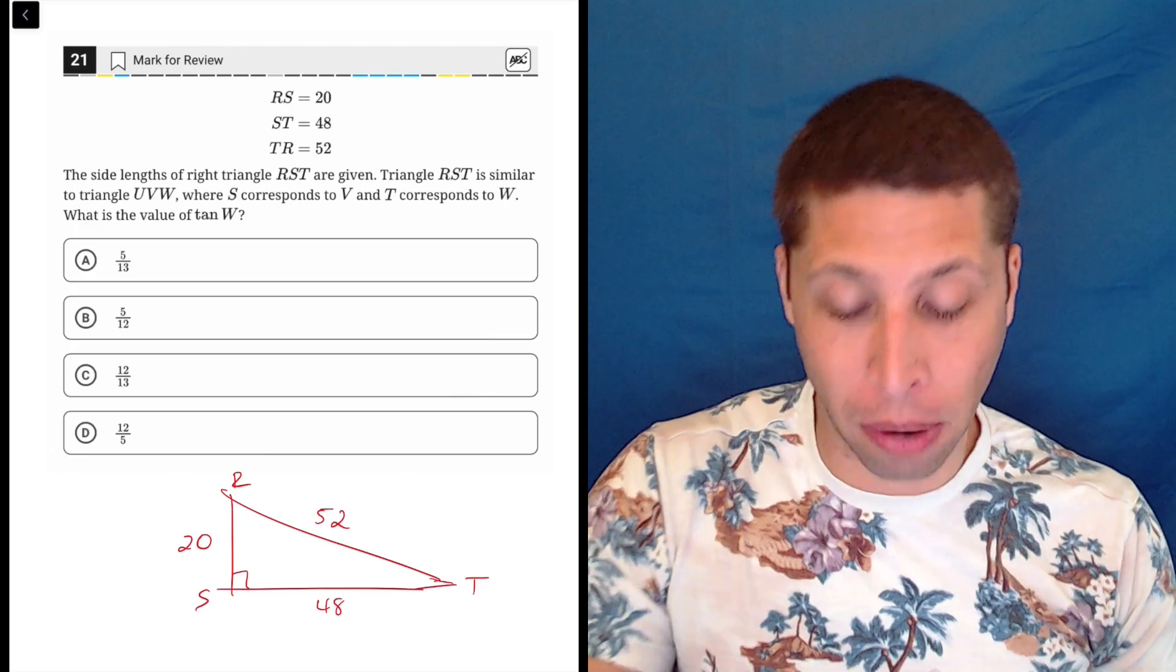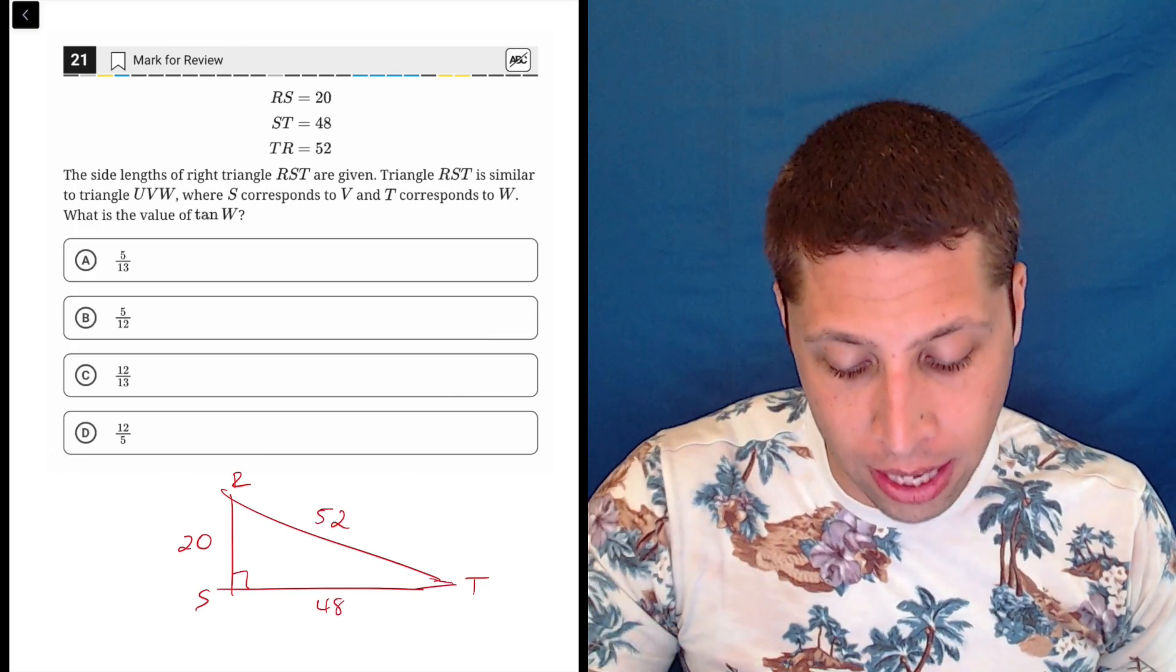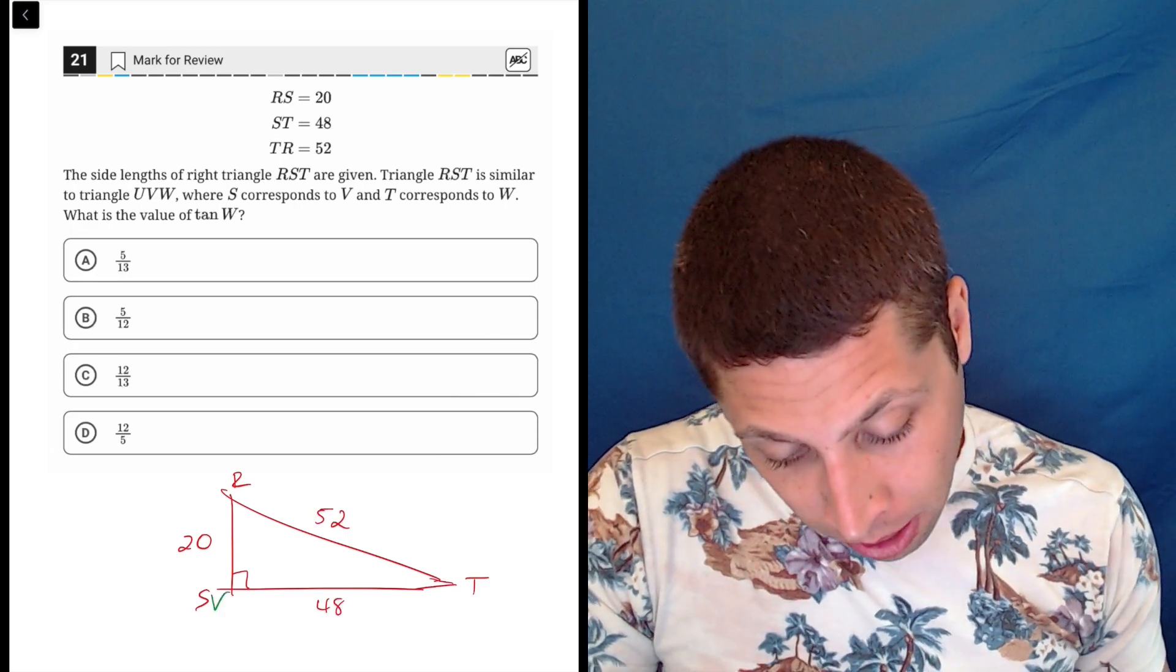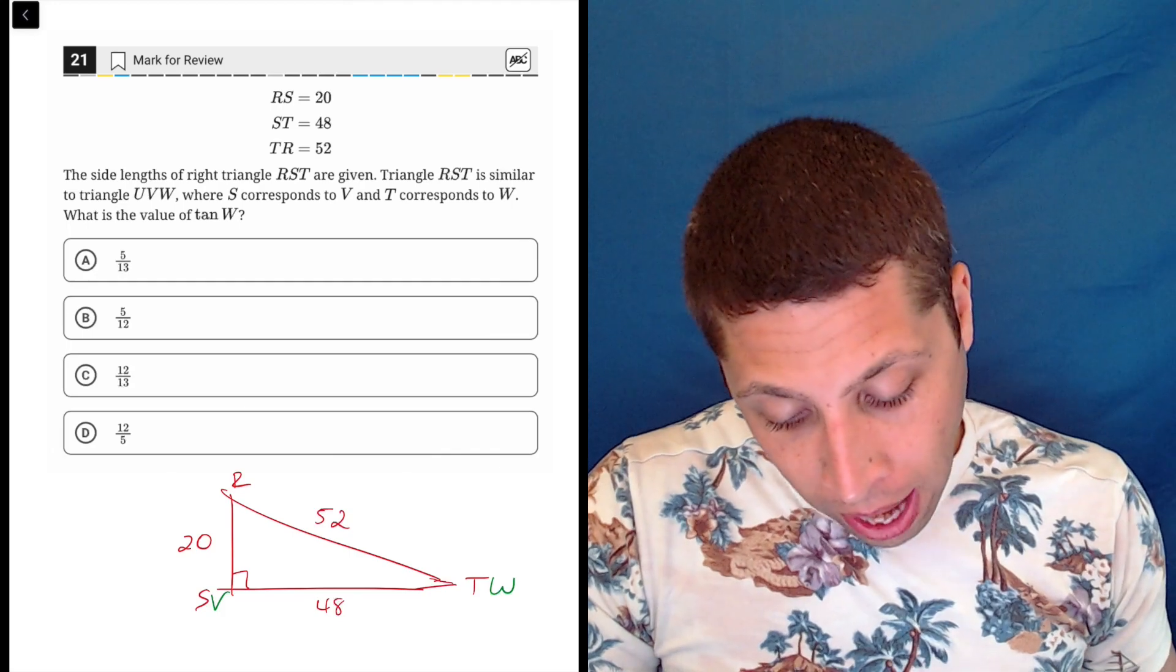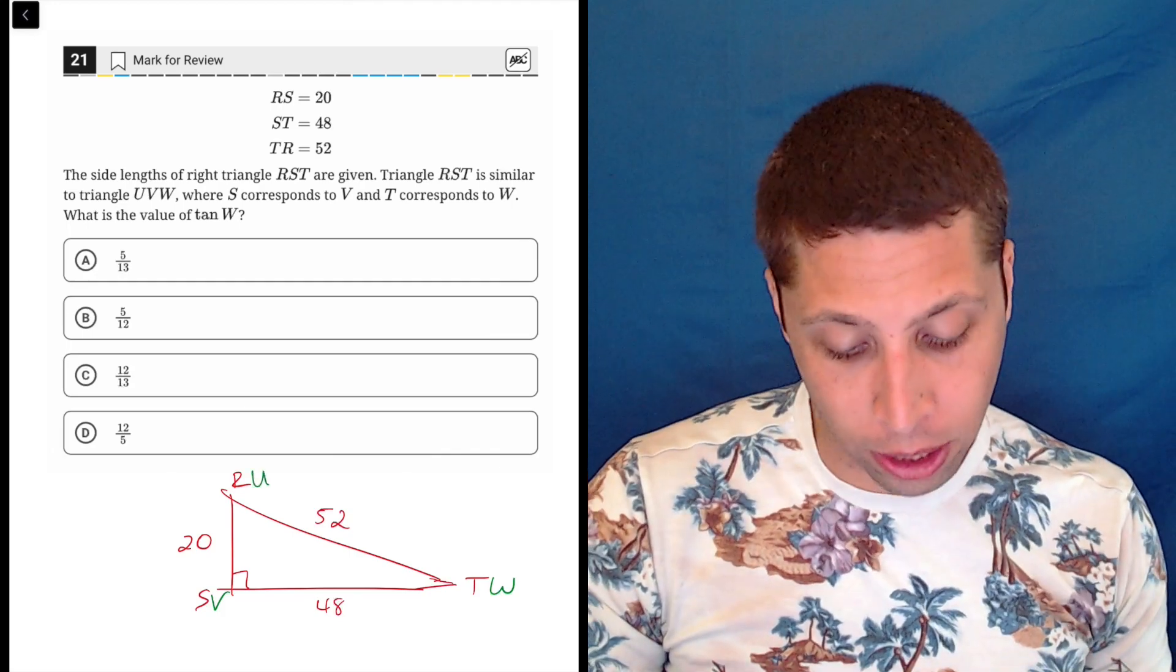How do UV and W line up with RS and T? They tell us S corresponds to V, so let's put a V here. T corresponds to W, let's put a W here. And then U has to be up with R. So there you go.